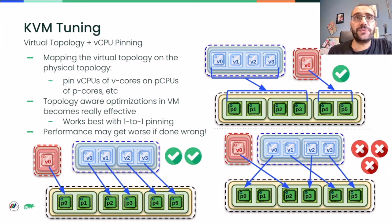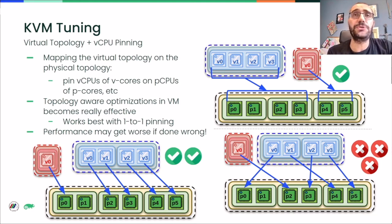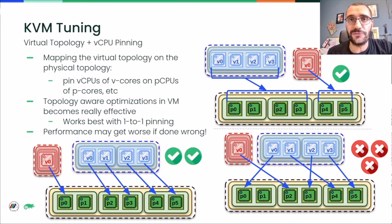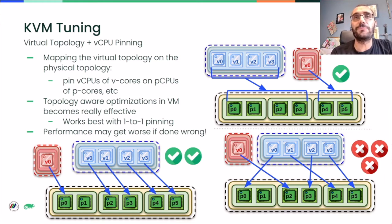We can combine vCPU pinning and virtual topology to achieve potentially very good results, if we pin vCPUs such that the virtual topology defined for the VM matches the physical topology of the group of pCPUs where the VM's vCPUs run. However, we can also completely mess up performance if we badly mismatch the guest and host topologies — for example, by pinning vCPUs of a virtual core on pCPUs from different physical cores, and even worse if we also get the resource partitioning part wrong.